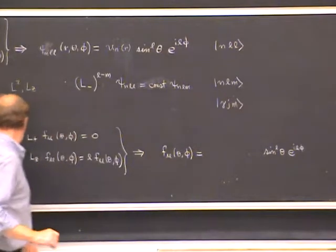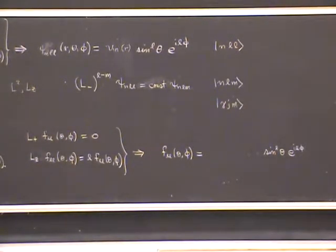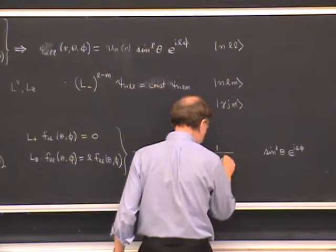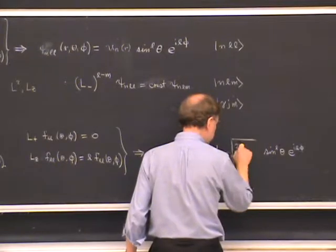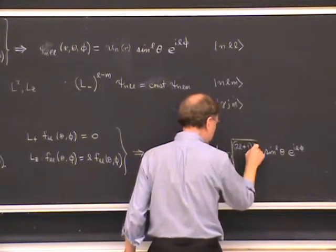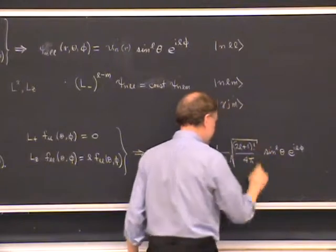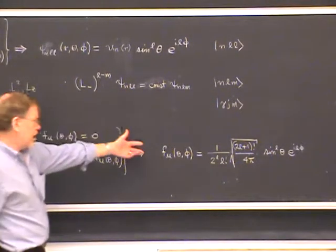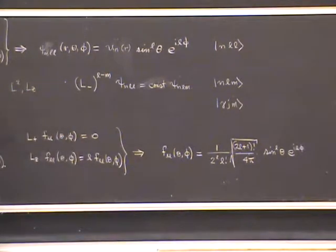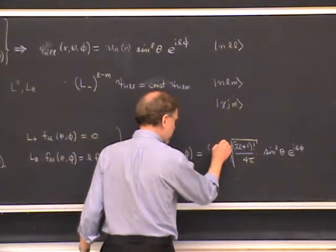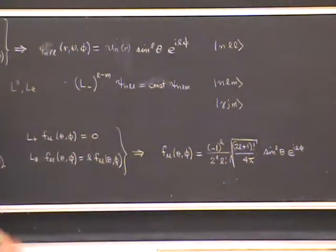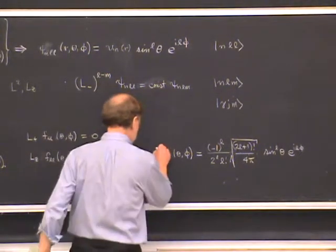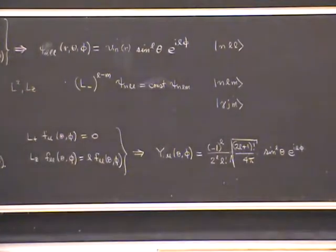If we normalize this by integrating over all solid angles, the normalization constant is 1/(2^L * L!) times the square root of (2L+1)! divided by 4*pi. This is the normalized stretch state. Finally, introducing a conventional phase factor of (-1)^L — which is just a convention — we call it Y instead of F, because this is the stretched Y_LL, the stretched state for the spherical harmonics Y_LM.